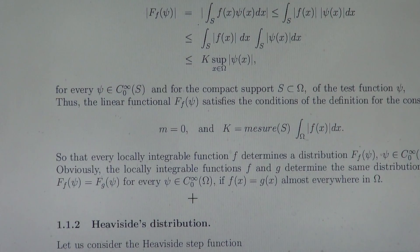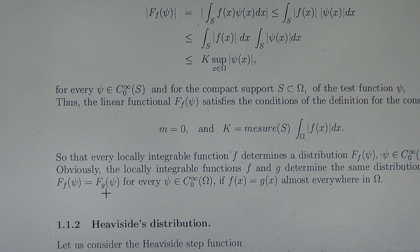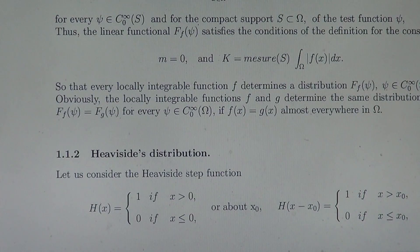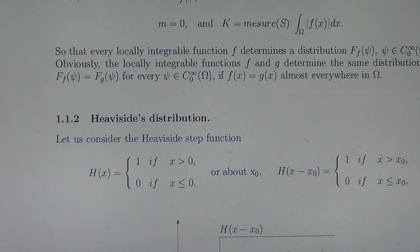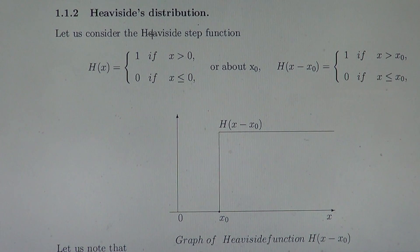Let us observe that if two functions f and g determine the same distribution — meaning the functional values are equal for every test function psi — then f(x) equals g(x) almost everywhere in omega. 'Almost everywhere' means everywhere except a set of measure zero, which is a known notion in real analysis.